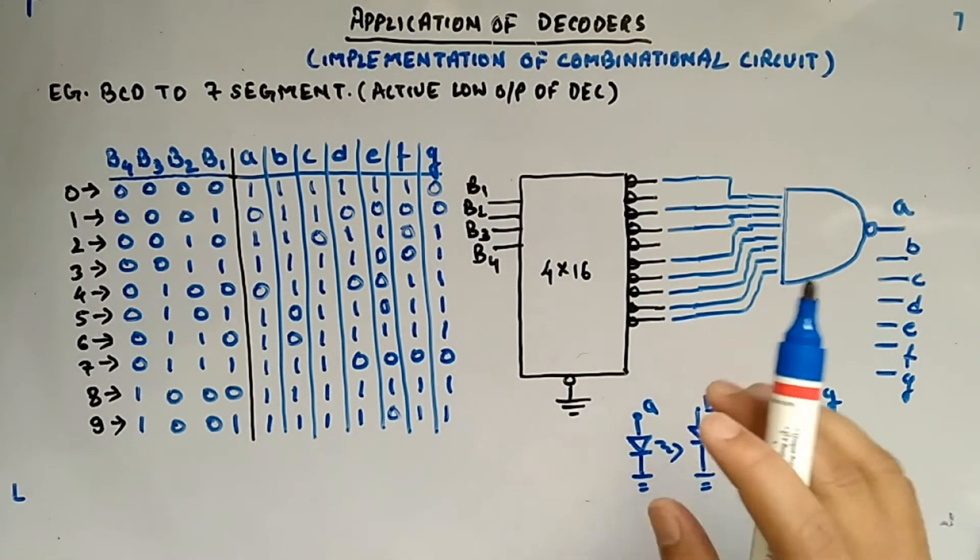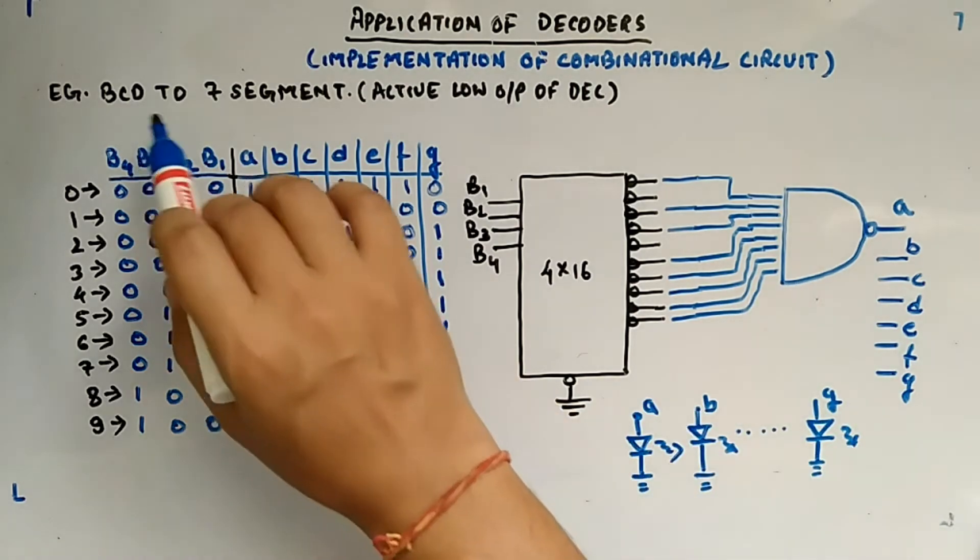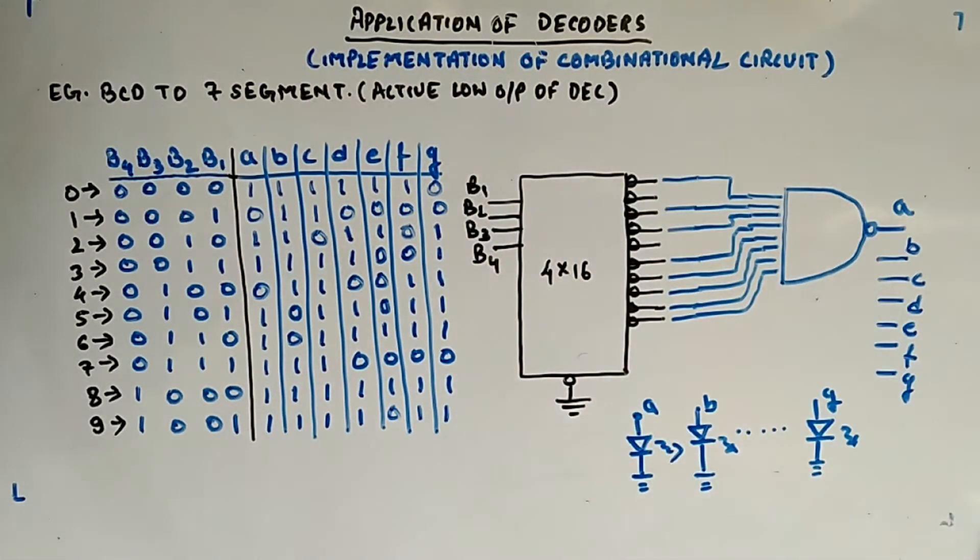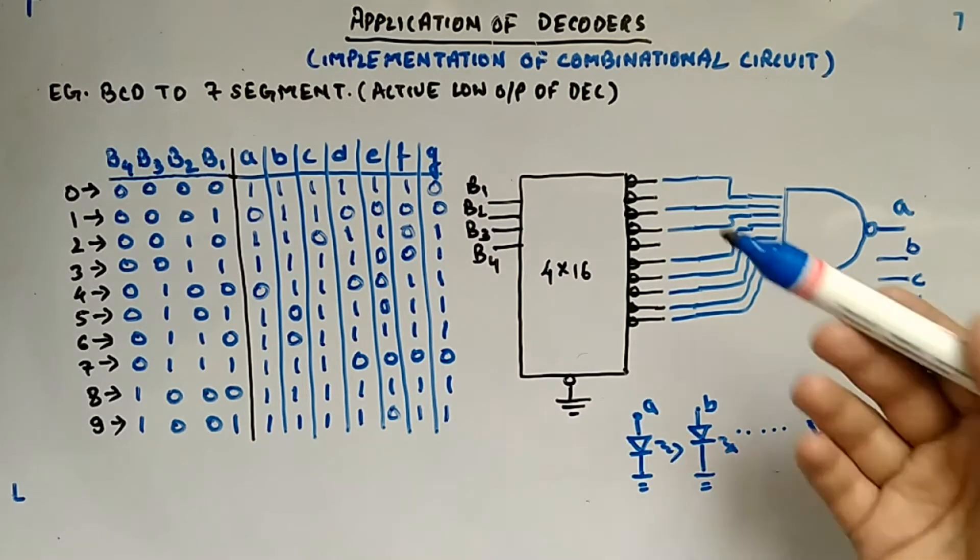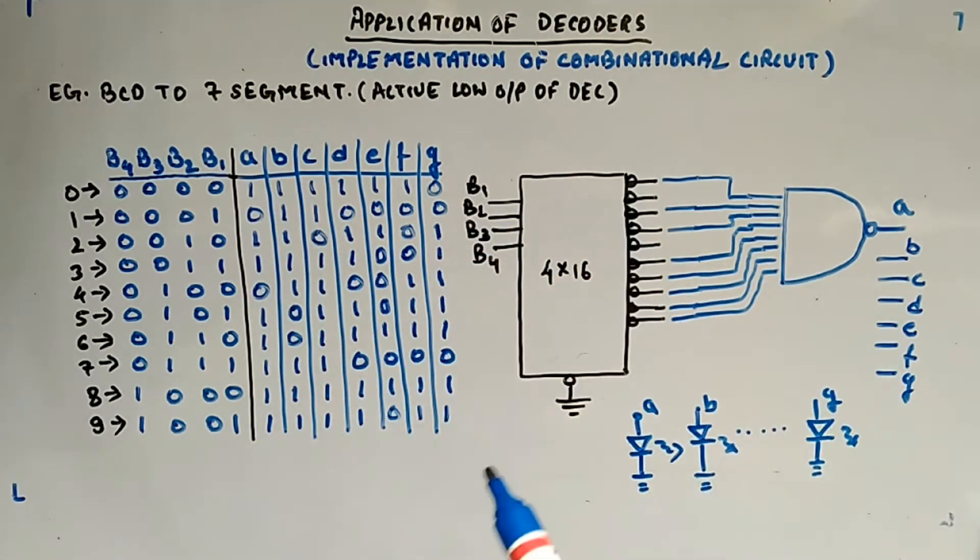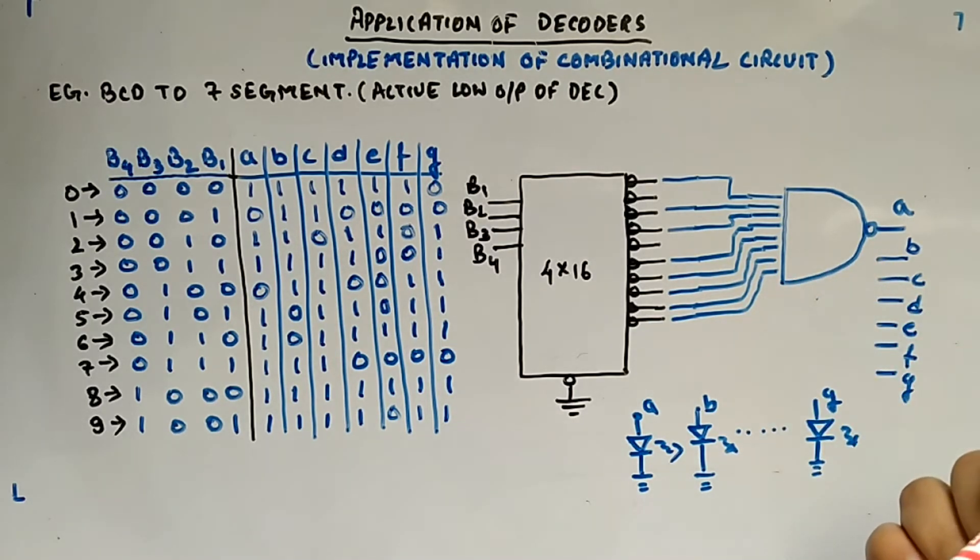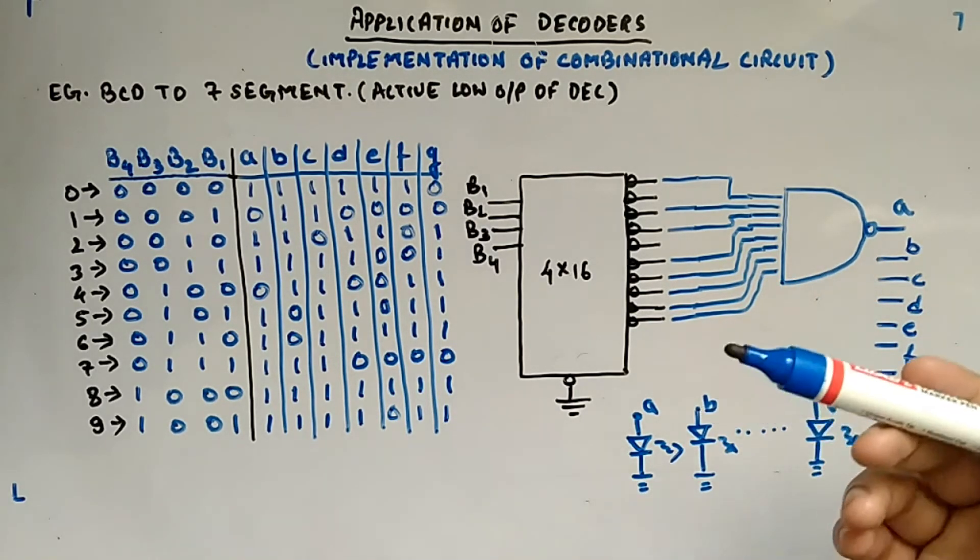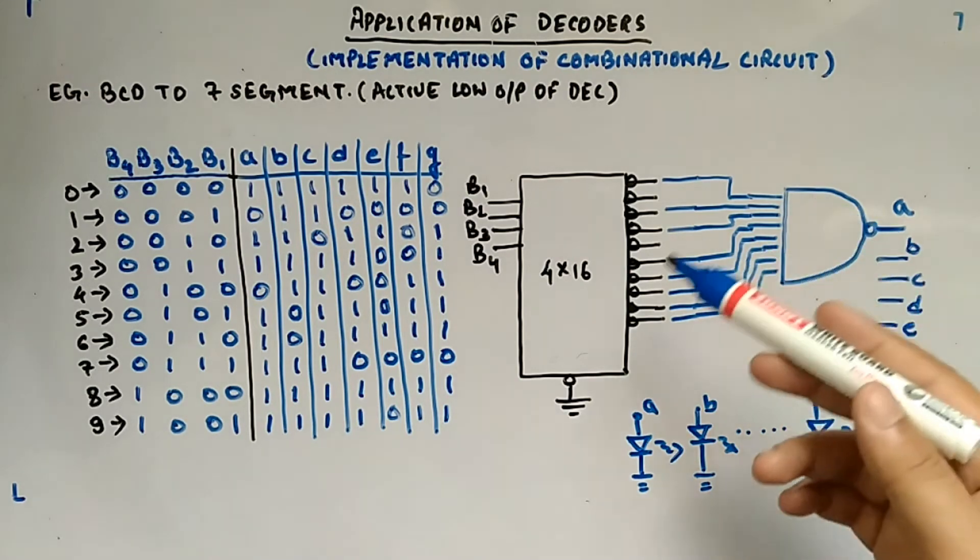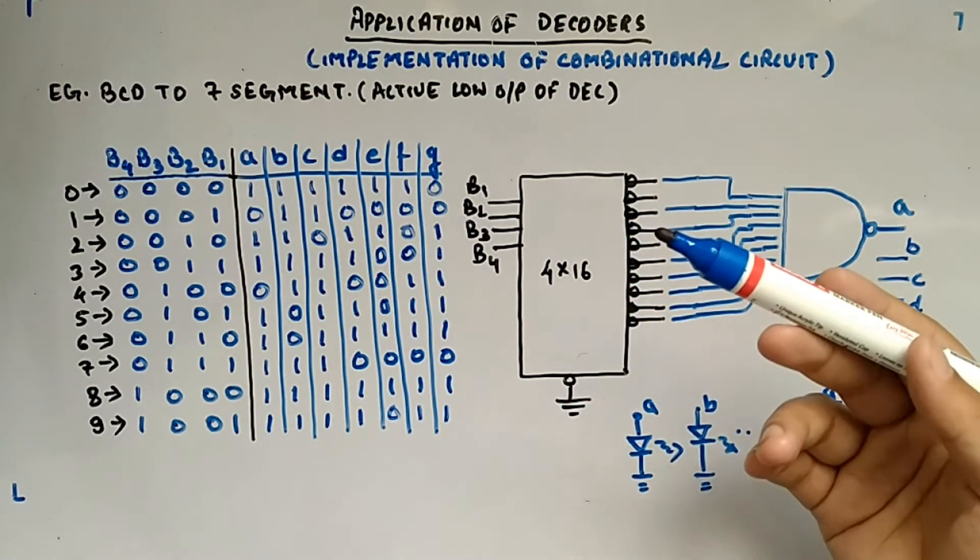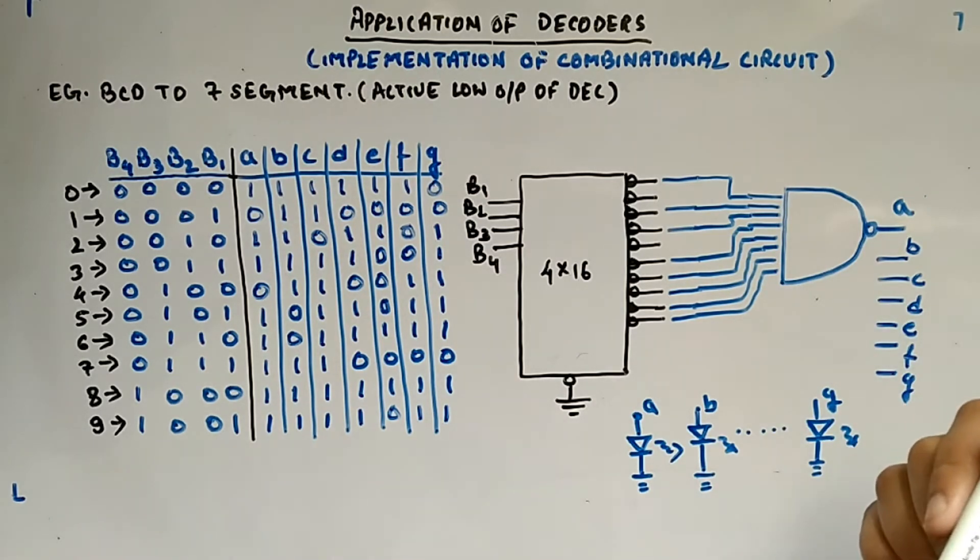So this is how you will design BCD to 7 segment display using active low type of decoder. Before that we have seen active high with OR gate and same thing we have seen with full adder as well. We have designed the full adder with OR gate and 3x8 decoder which was active high type and this is now and another one was 3x8 decoder active low type with NAND gate.